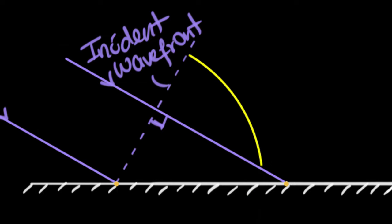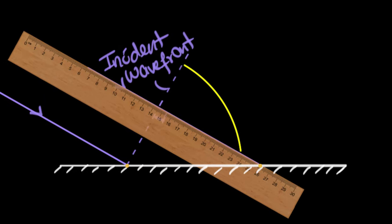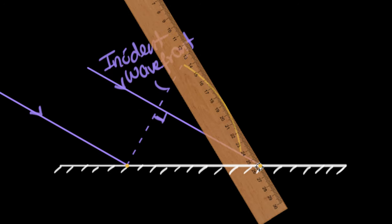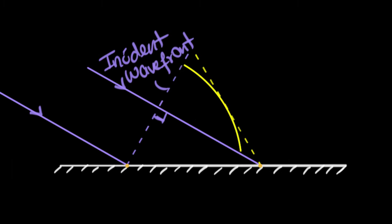That arc represents the reflected wave from this Huygens source. At the same time, this other Huygens source just got activated — the incident wavefront is now here — so the wave produced by this source is still a point. To draw the reflected wavefront, I draw a tangent from this arc to that point. Bringing in my ruler, I make the tangent and draw a dashed line from here to here — that represents my reflected wavefront.